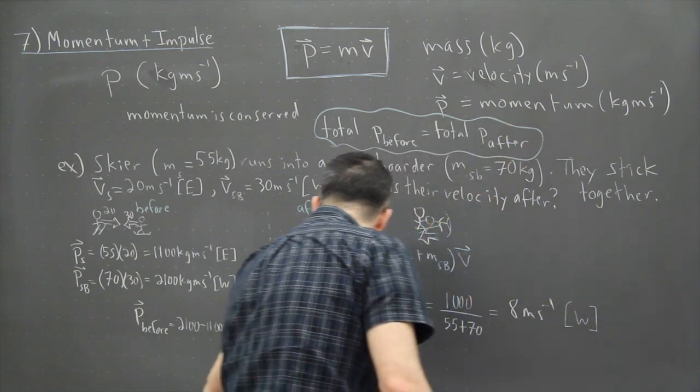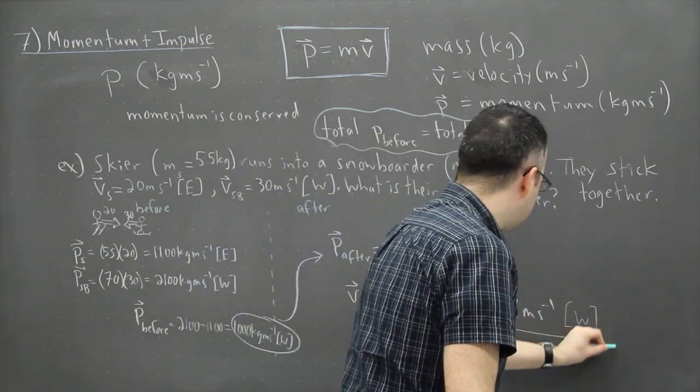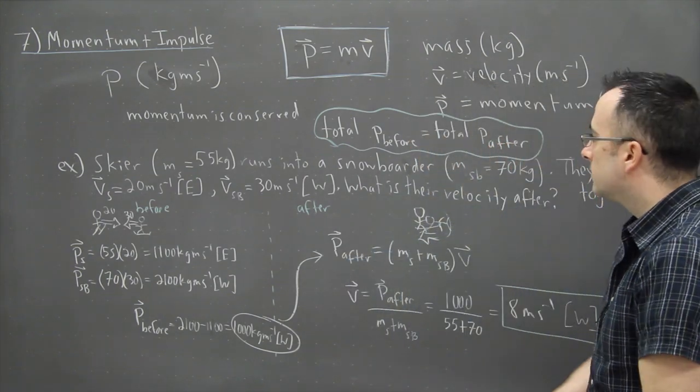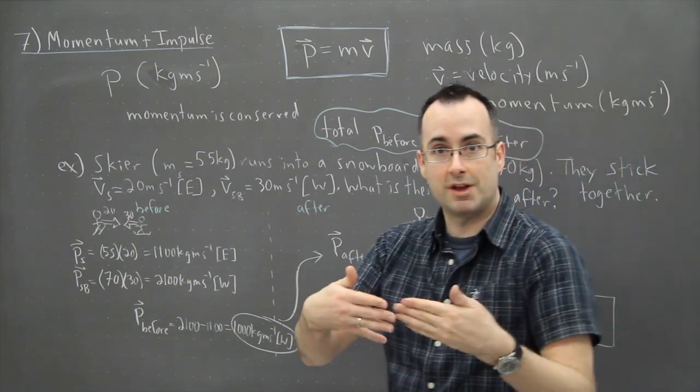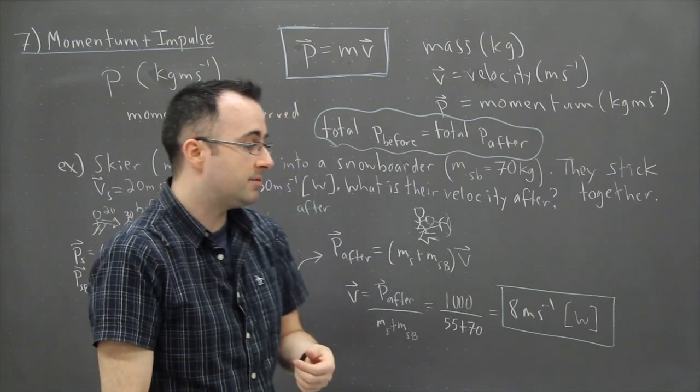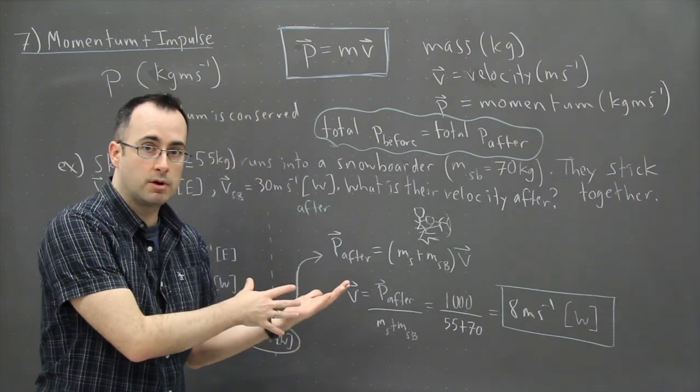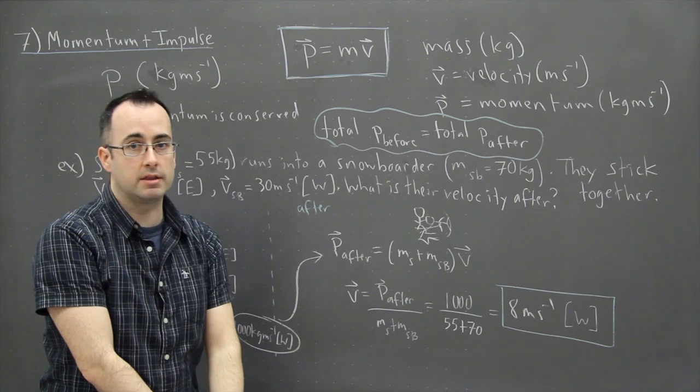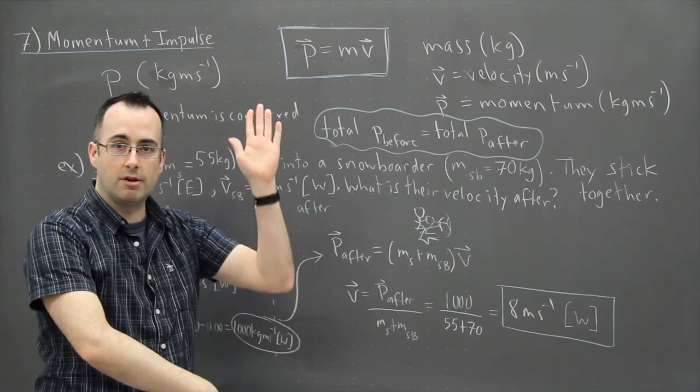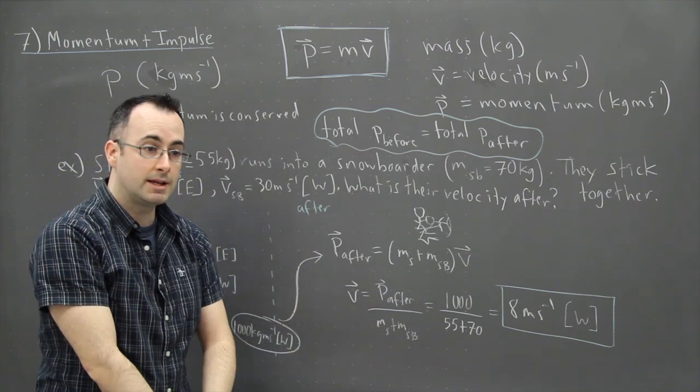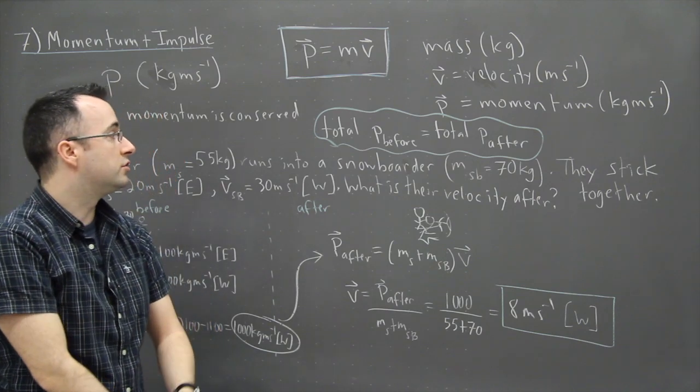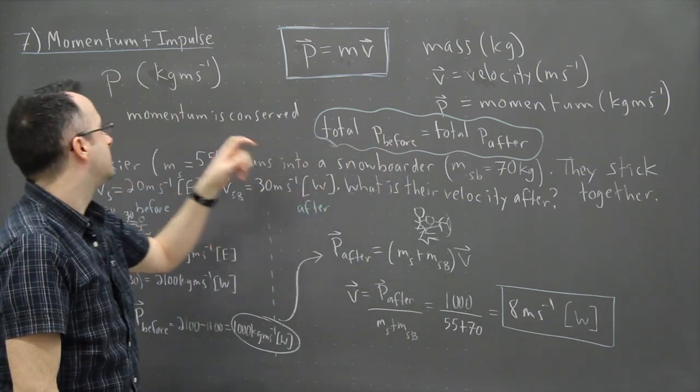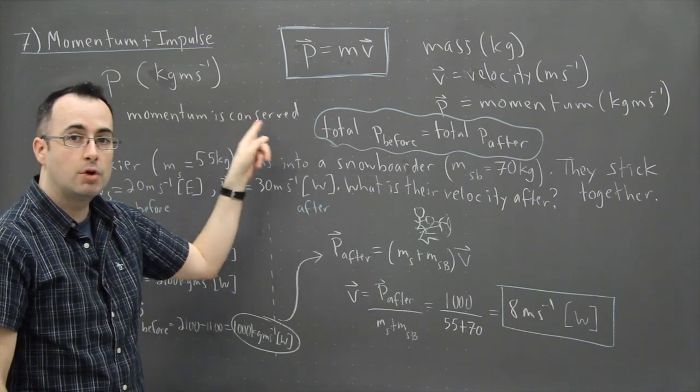So the good news is, we can use conservation of momentum to solve all sorts of crazy looking problems. We can have one person running into another one. And as long as we keep track of the total momentum before and the total momentum after, then we can actually solve just about anything. This could have been in 2D or 3D or all sorts of crazy situations. It wouldn't matter. The key thing here is that we know the total momentum before is the same as the total momentum after. We say that is momentum conservation.